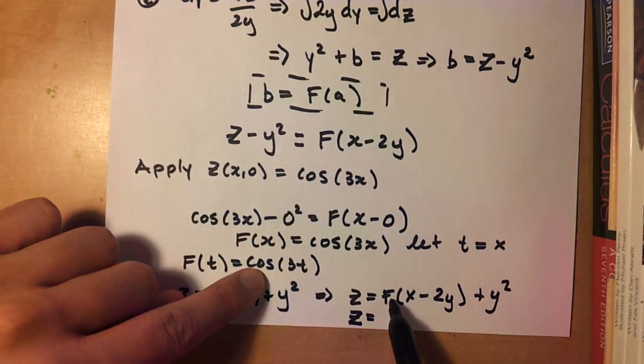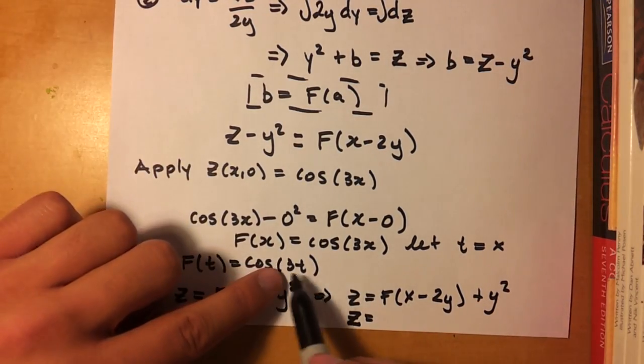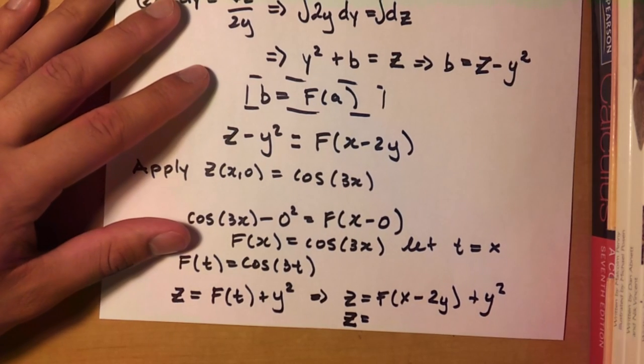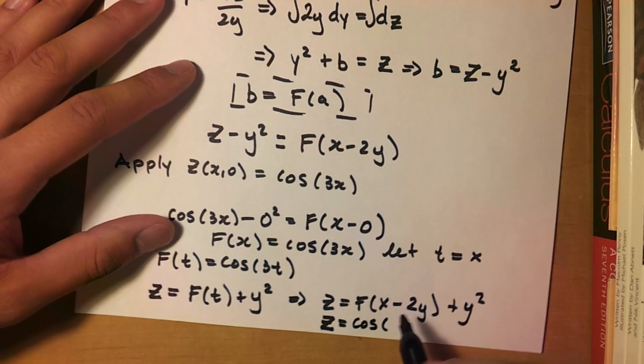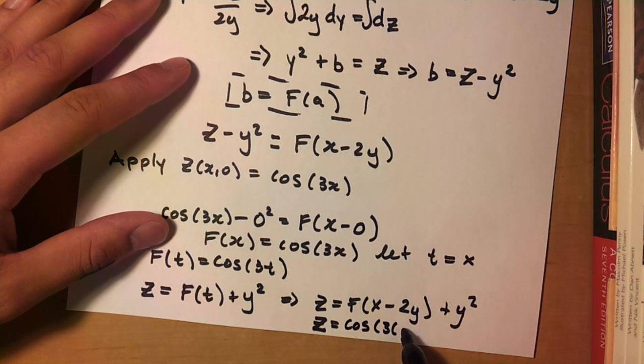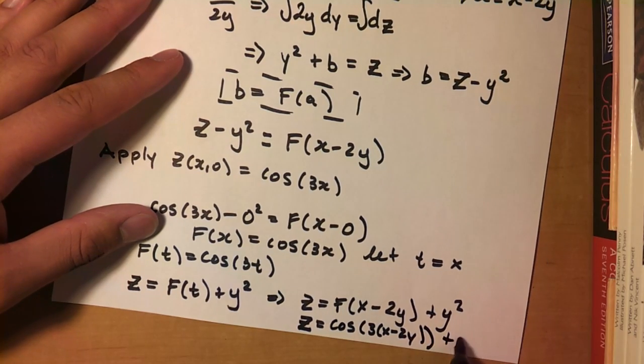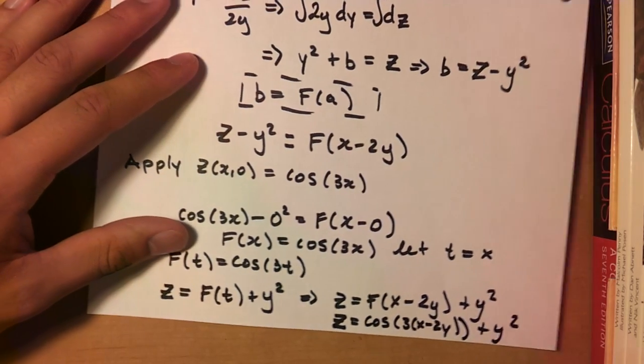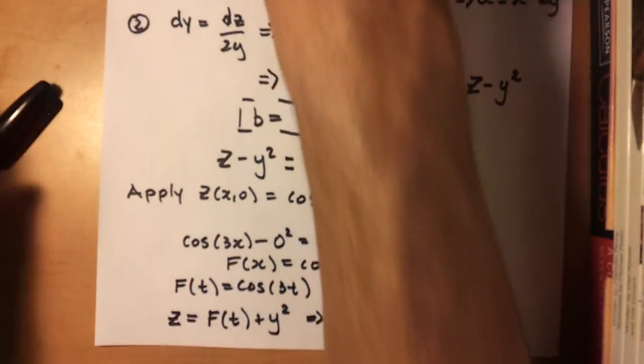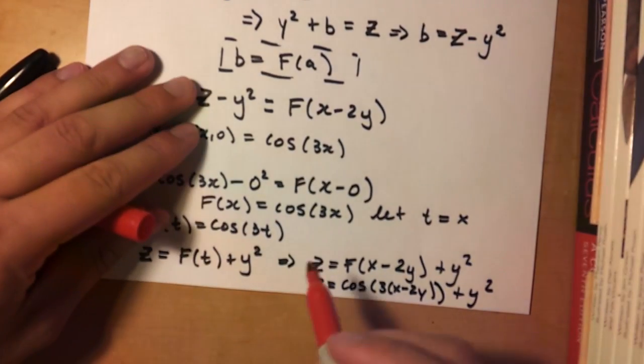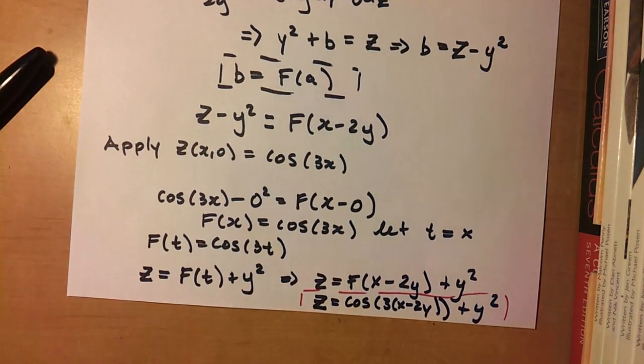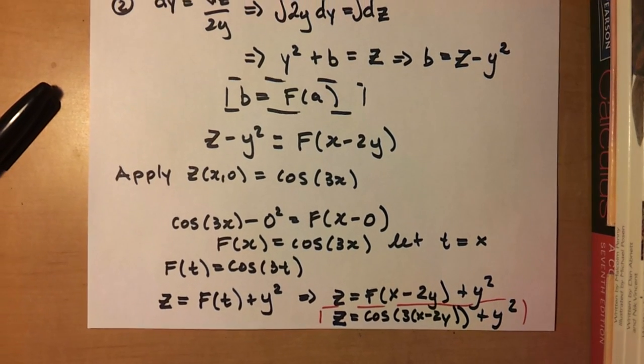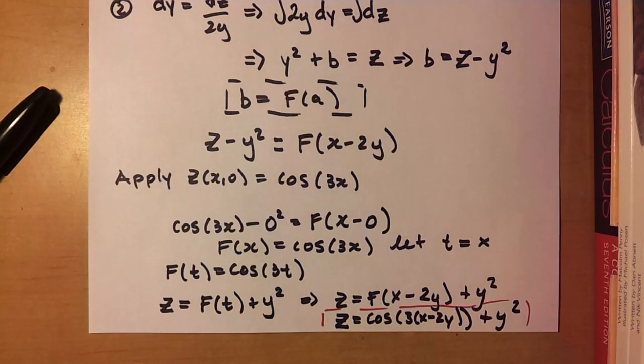And then I'm just going to try and squeeze that in there. So the last thing you have to do is just plug in for this function, which is going to be 3t. So you're going to have cos of 3 times x minus 2y, close bracket, plus y squared. And this badass little equation is our solution to this problem. Alright, fantastic.